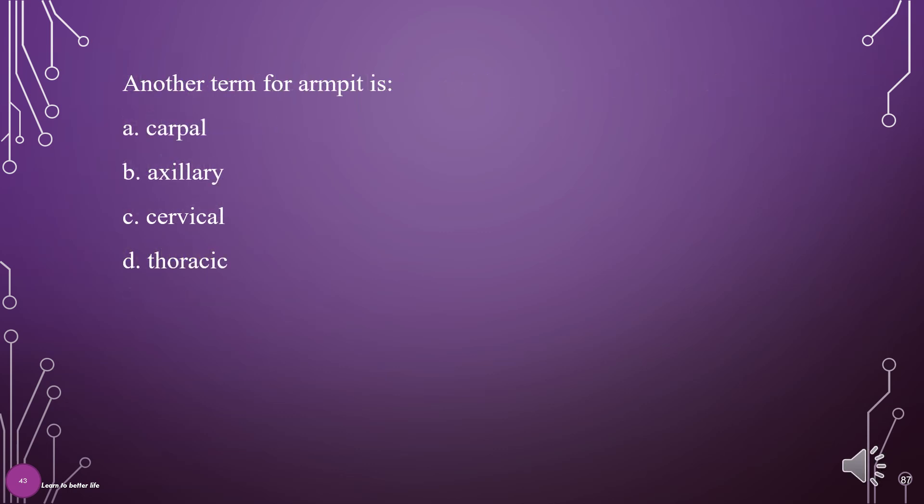Another term for armpit is: A. Carpal, B. Axillary, C. Cervical, D. Thoracic. The answer is B: Axillary.